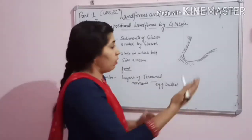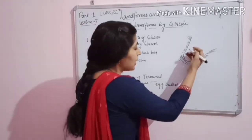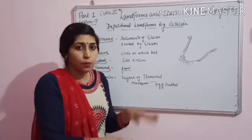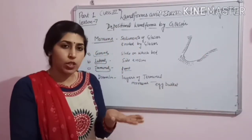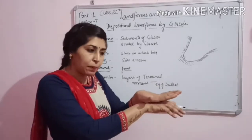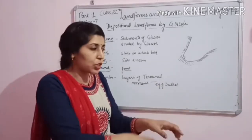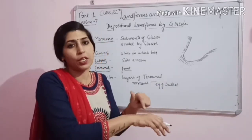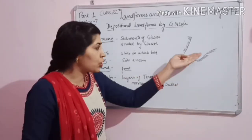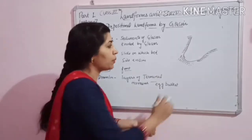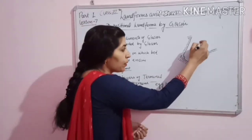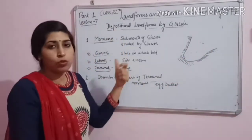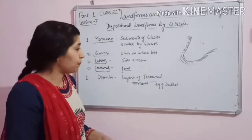Ground moraines means: on the base on which the glacier is doing erosion — the bed on which the glacier is eroding — the sediments that are below that glacier right now, beneath that glacier, are called ground moraines.